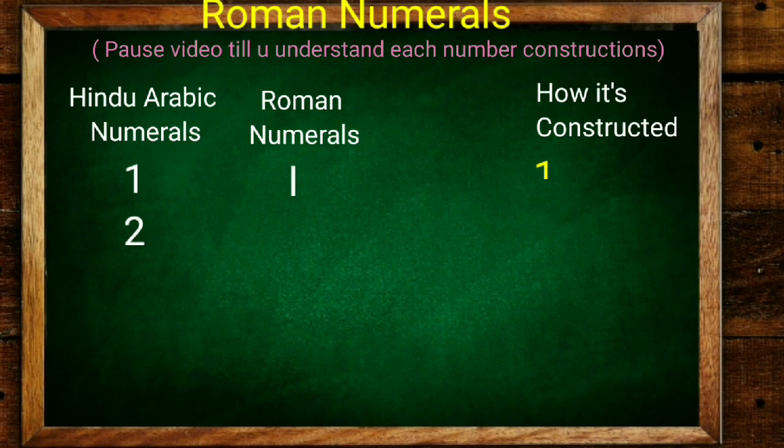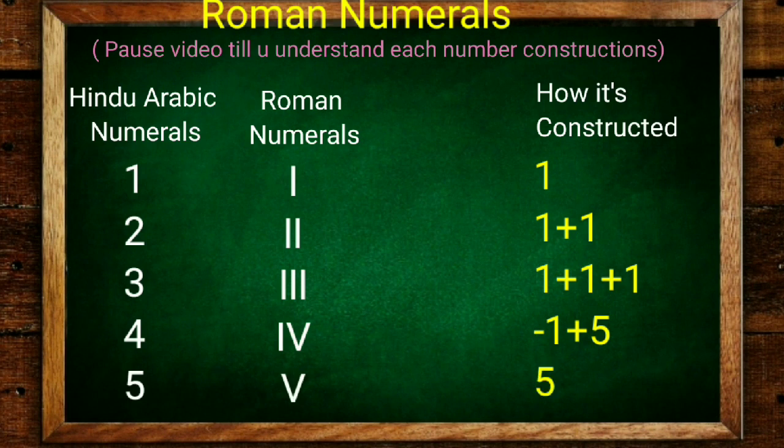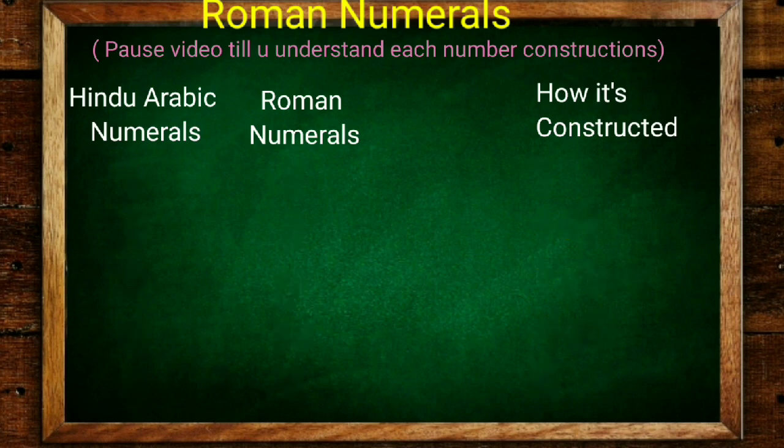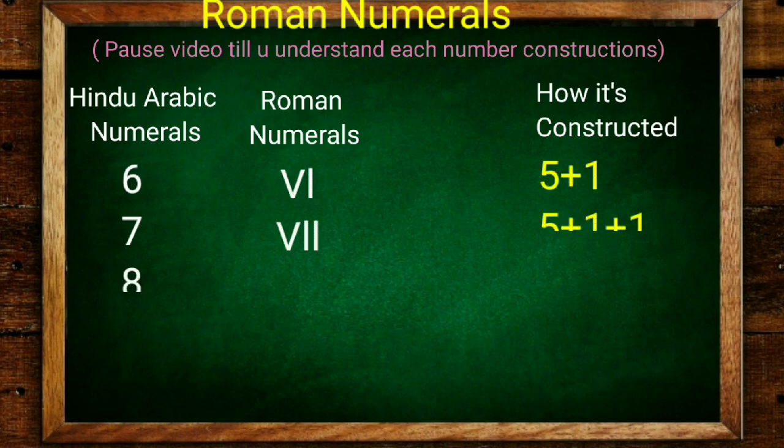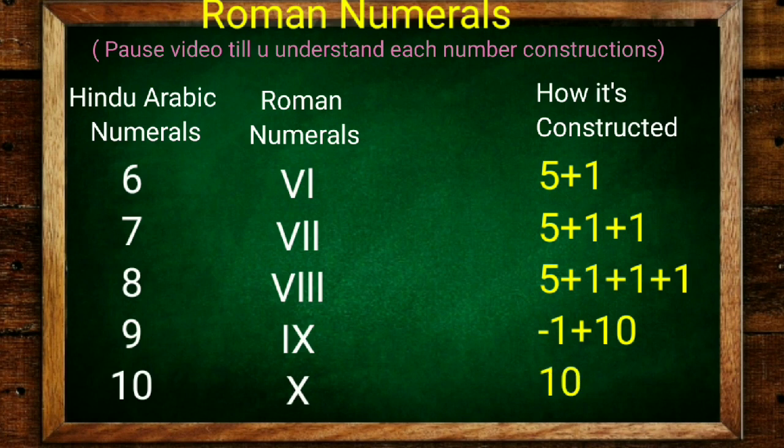Please pause and learn each number carefully. So 1 is I, 2 is I plus I (1 plus 1), 3 is 1 plus 1 plus 1. 4 is special: 5 minus 1. V is 5. 6 is 5 plus 1, 7 is 5 plus 2, 8 is 5 plus 3. 9 is 10 minus 1, and 10 is X.